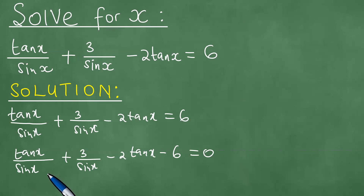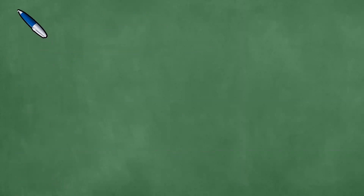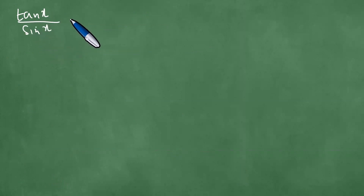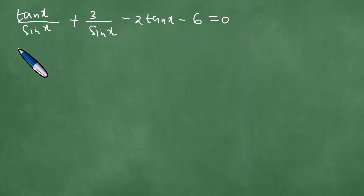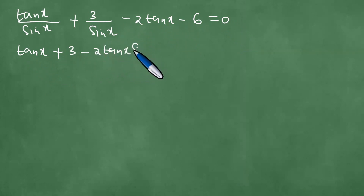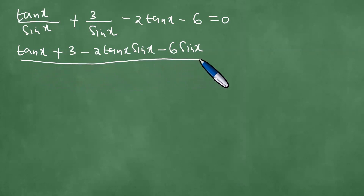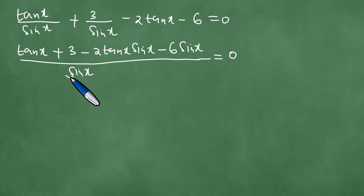The next thing we are going to do is take the lowest common denominator. We have tangent of x plus 3 minus 2 tangent of x minus 6 sine x, all divided by sine x, equals 0. What we did here was just to take the lowest common denominator, and this is what we got.